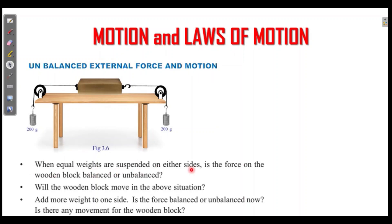When equal weights are suspended on either side, is the force on the wooden block balanced or unbalanced? Two equal weights acting in opposite directions — the resultant is zero. Will the wooden block move in any situation? No — it will not move.